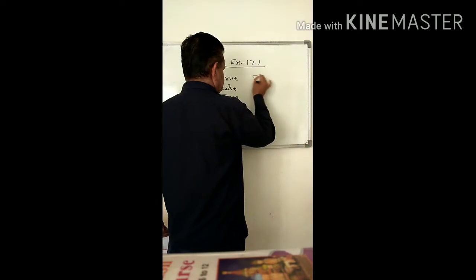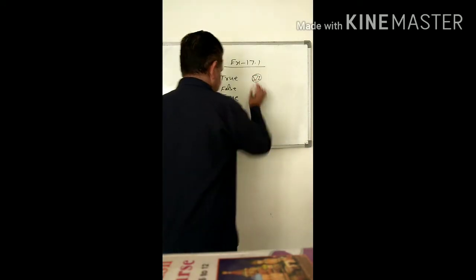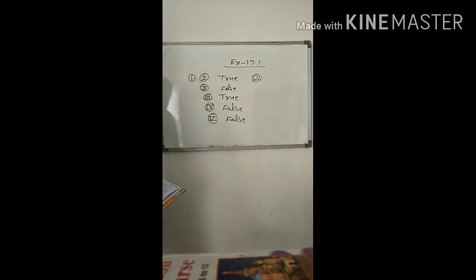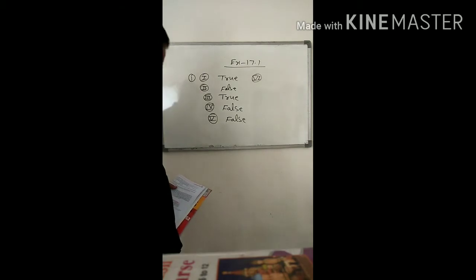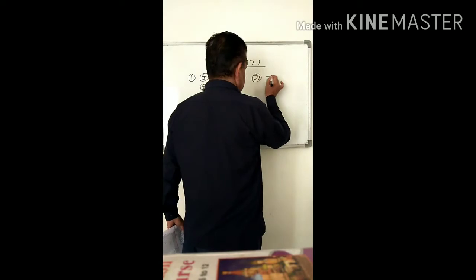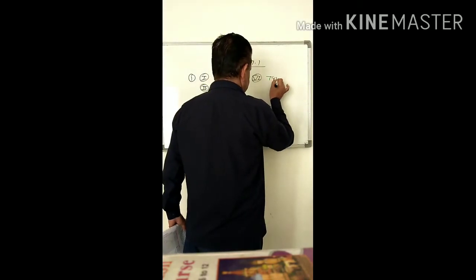6th part: The point (x, y) lies on the y-axis if x is equal to 0. This is true.